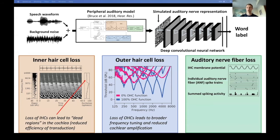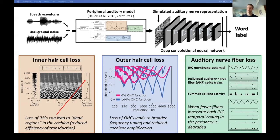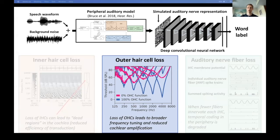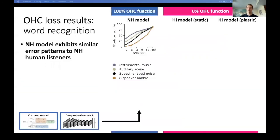We can also simulate auditory nerve fiber loss, which has recently gained interest as a possible mechanism for hidden hearing loss. To model a healthy ear, we have about 20 auditory nerve fibers innervating each inner hair cell, and their spiking activity nicely encodes temporal changes in the inner hair cell membrane potential. To model the impaired ear, we sample fewer spike trains per inner hair cell, which effectively degrades the fidelity of temporal coding in the periphery. Today I'll primarily be showing results for networks with simulated outer hair cell loss. The network trained and tested with the healthy cochlear exhibits normal hearing, human-like performance when tested on the same stimuli.